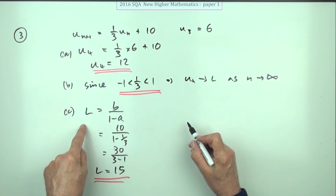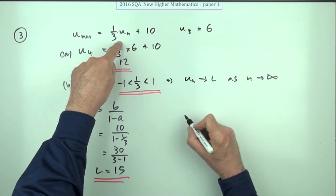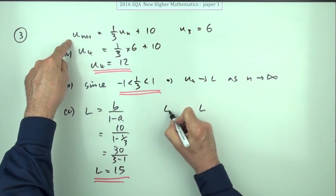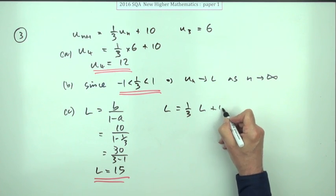You may have started by saying, well, if un approaches a limit, that means you'll still have the same answer after you multiply it by a third and add 10.